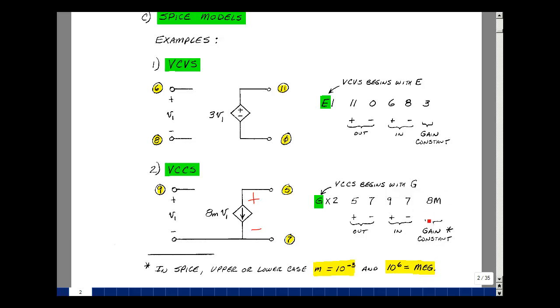And you can do uppercase or lowercase now in PSPICE. This is a very common mistake that people make in doing SPICE files, because in the course, we're going to use little m for milli and capital M for mega. But in SPICE, it's the same thing, 10 to the minus three. And if you want mega ohms or whatever, for 10 to the sixth, you need MEG.